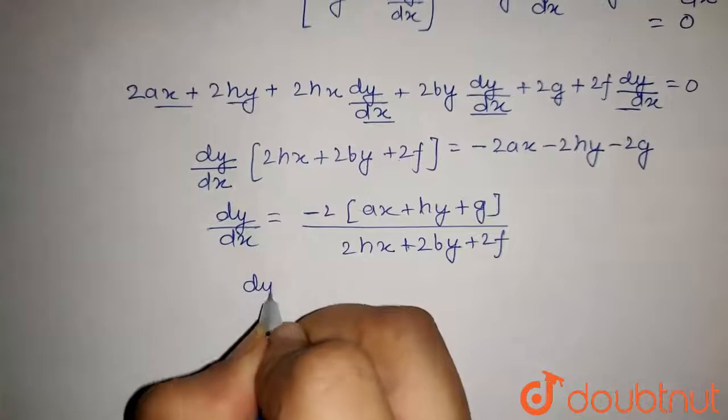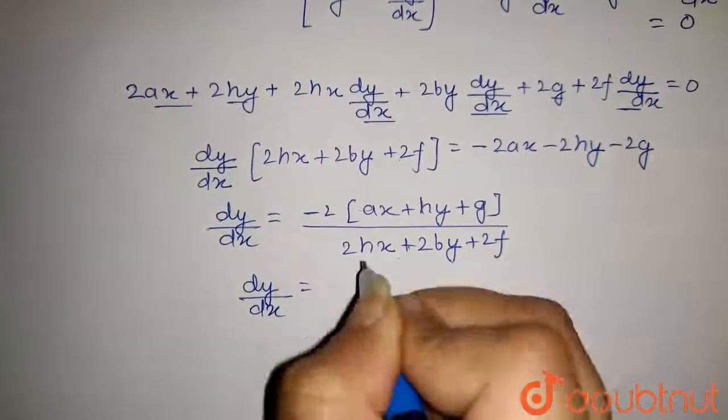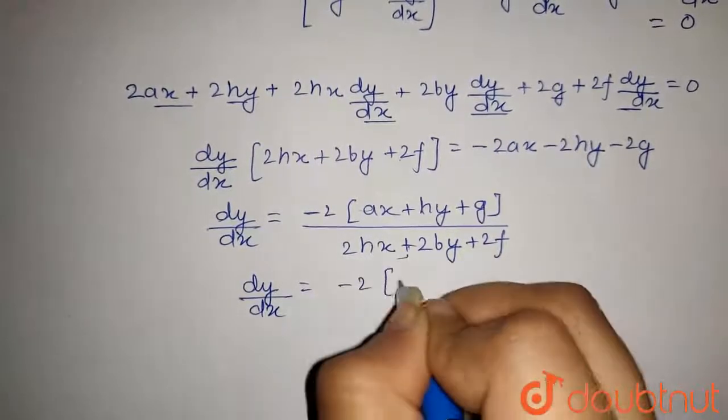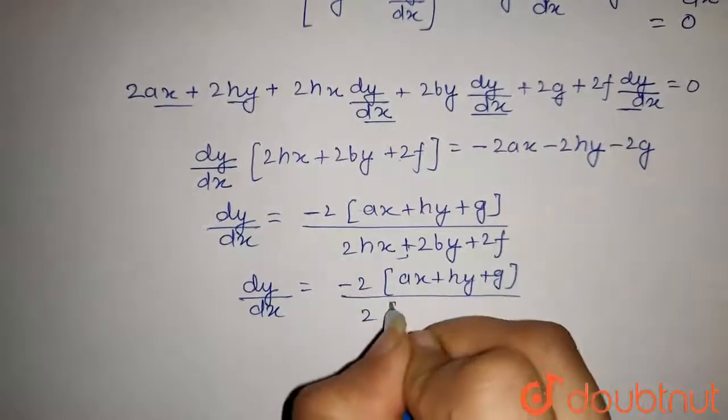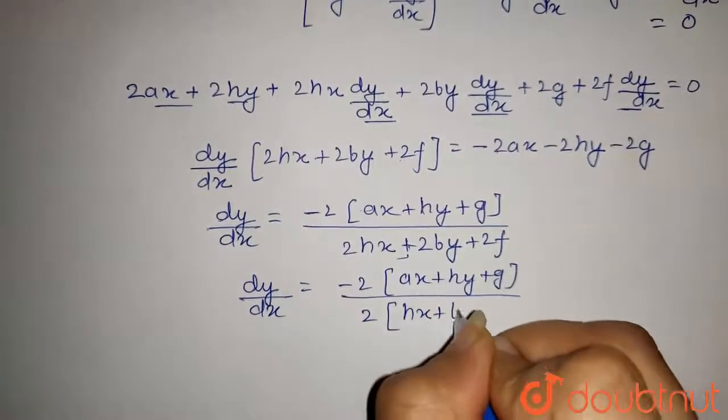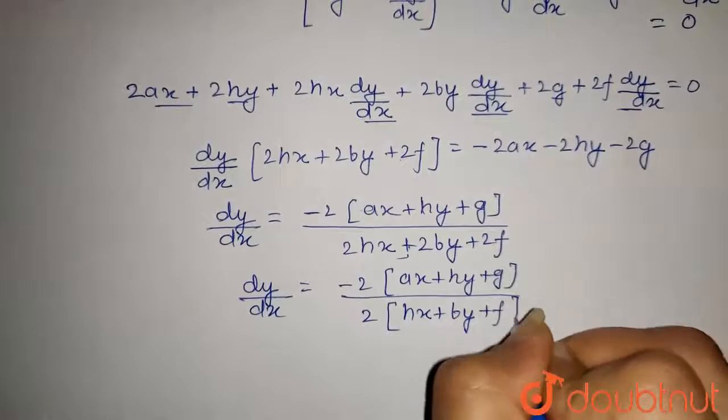Now, taking common 2 from denominator, we get minus 2 into ax plus hy plus g upon 2 into hx plus by plus f.